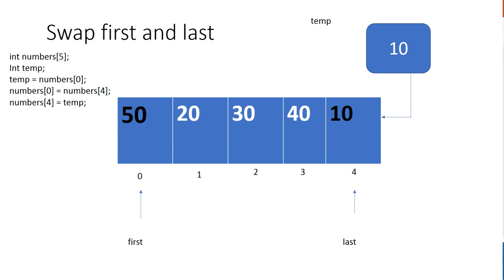We want to continue doing this for the next element, right up until we reach the middle. We don't want to keep swapping past the middle — if 'first' passes the middle, our swaps are going to ruin the whole process. So we loop until these two pointers either meet each other or 'first' reaches 'last'.